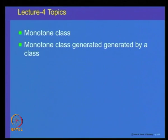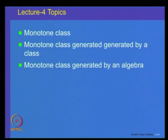Welcome to lecture 4 on Measure and Integration. We have been looking at classes of subsets of a set X with various properties. We started with the semi-algebra of subsets of X, then looked at the algebra of subsets of X. Today, we will look at some more classes of subsets: a monotone class, the monotone class generated by a collection, and the monotone class generated by an algebra — an important relation we will use repeatedly.